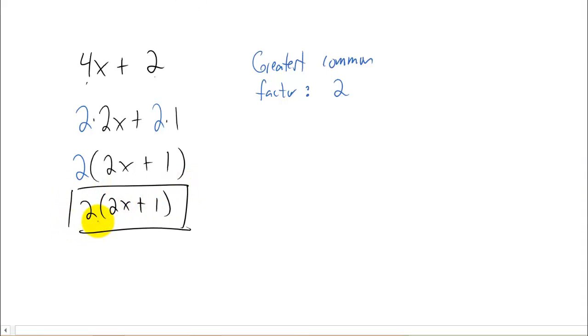Again, if you're not sure about your answer, try to multiply the thing back out. You're really good at that now. So if you multiply 2 by 2x, you get 4x. And if you multiply 2 by 1, you'd get the plus 2. So you can always double check your answer to make sure that it's correct.